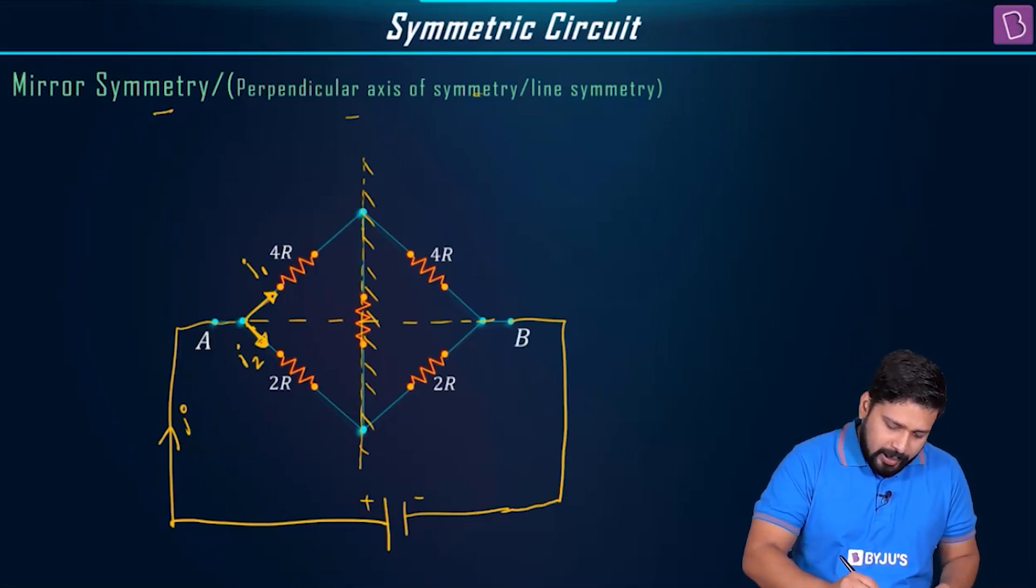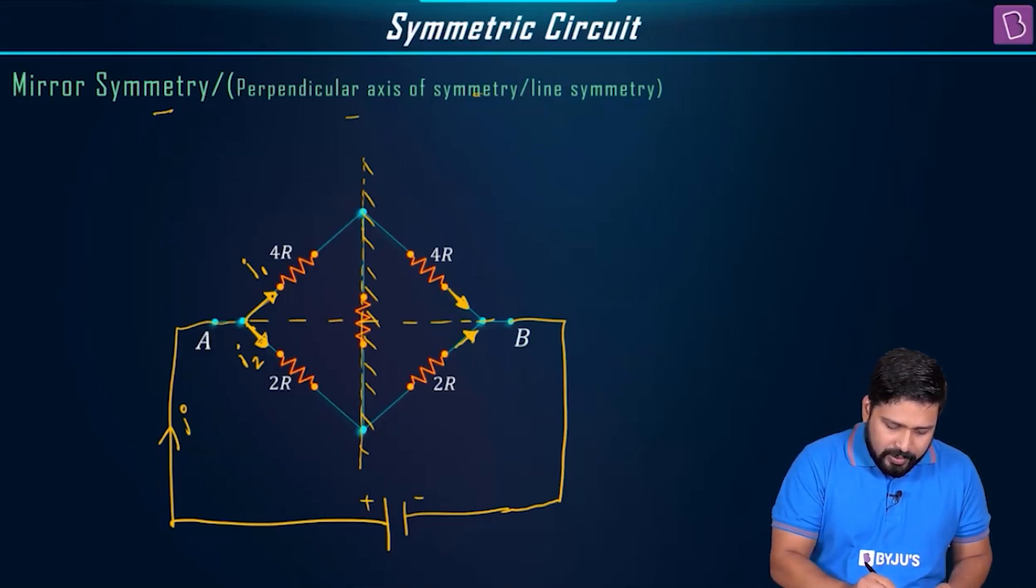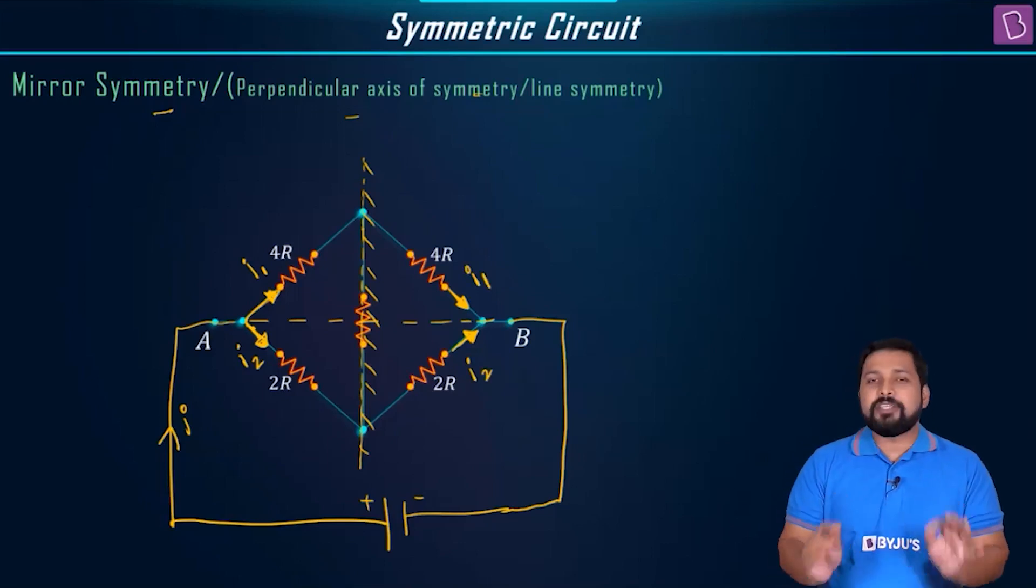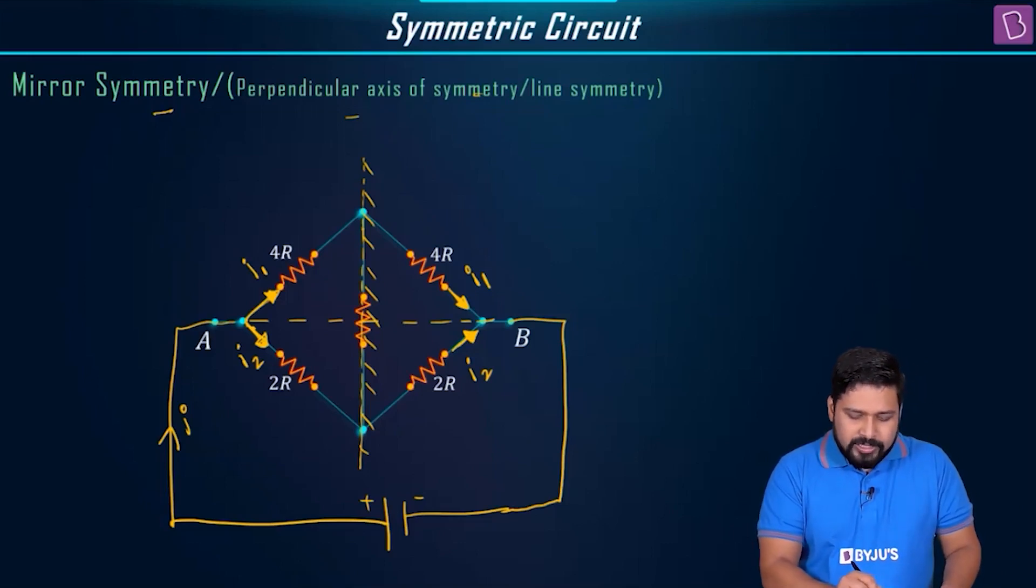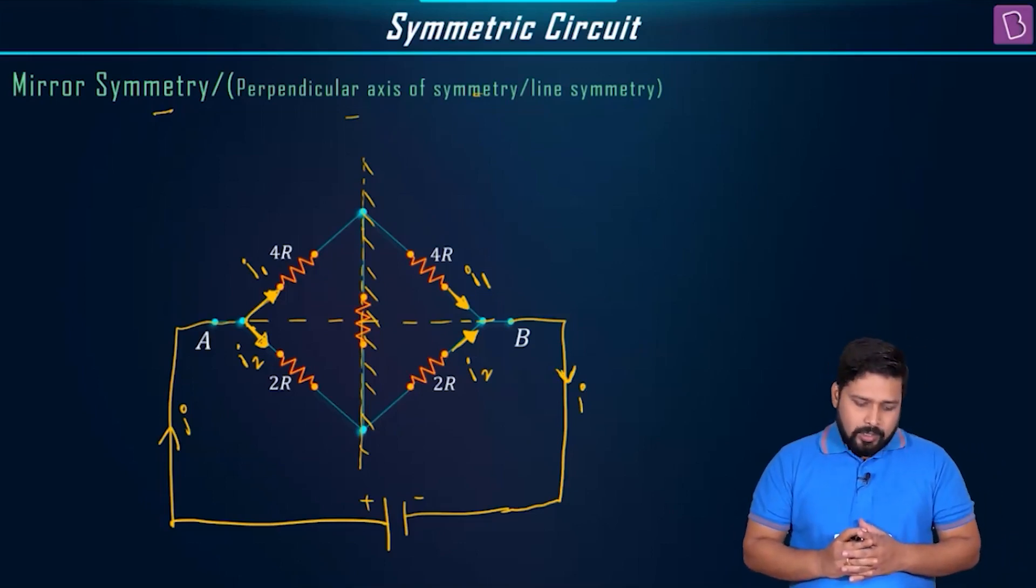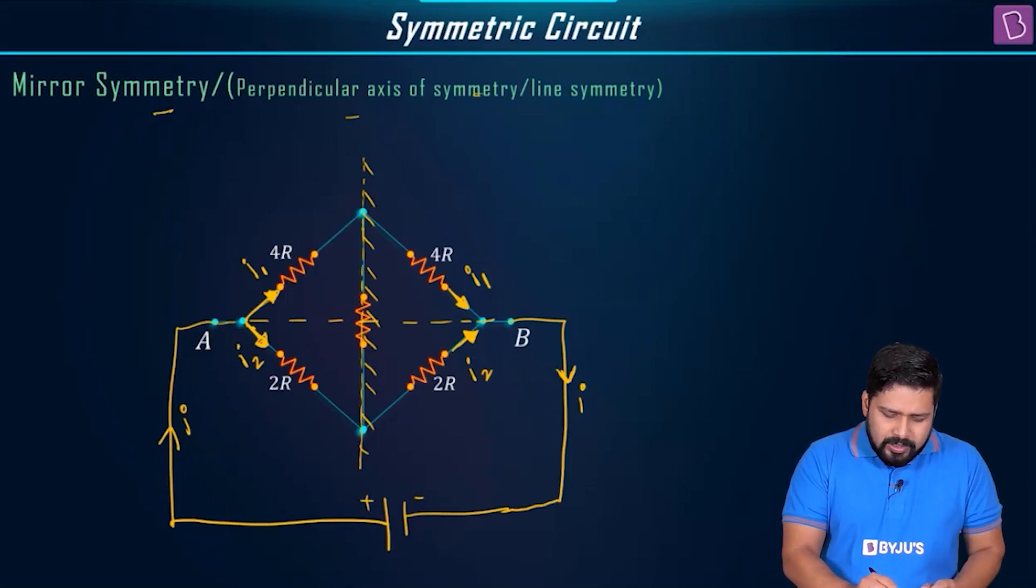If I1 is flowing through this 4R, I2 will flow out like this. So I1 in this circuit, then I1 will go out from here. I2 is coming through this 2R, so I2 will be going out like this. That's the symmetry. This is what you need to learn. If I1 is coming in through this, then I1 will flow out through this. I2 is coming in through this, then I2 will go out through this.